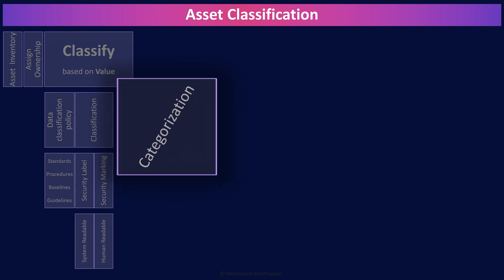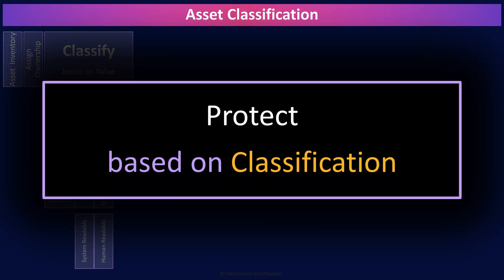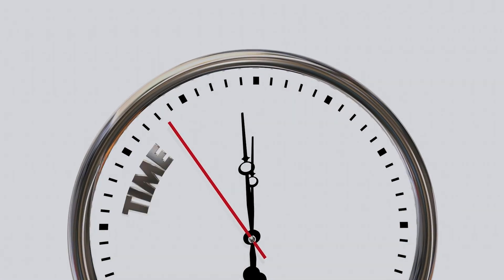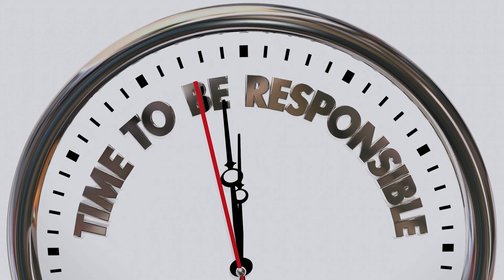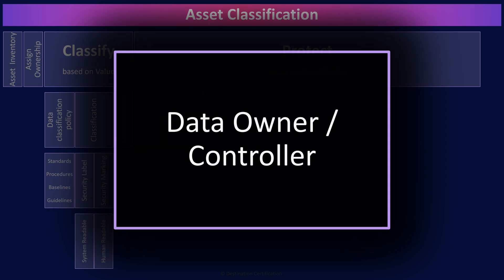How do we go about protecting assets based on their classification? We can begin by having clearly defined roles of who is accountable or responsible for what. The data owner, also known as the data controller, is the most important role, as the owner is accountable for the protection of data.